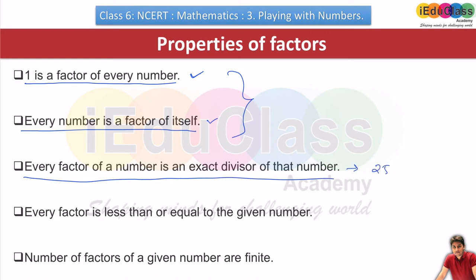Every factor of a number is an exact divisor. For example, 25÷5. If I say 5 is a factor of 25, why? Because 5 can divide 25 and 5 is an exact divisor. If you divide 25 by 5, you will get 0 as a remainder. That's why it is called an exact divisor. Next: every factor is less than or equal to the given number. So the minimum factor is one and the maximum factor is the number itself.